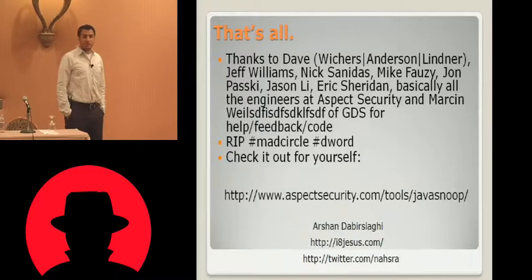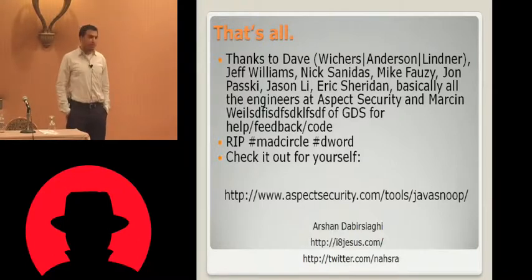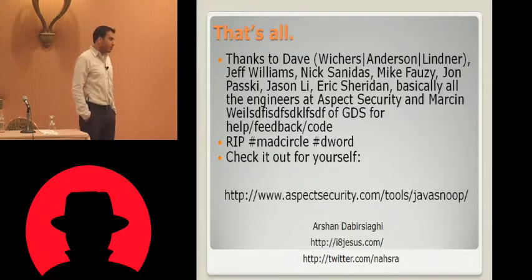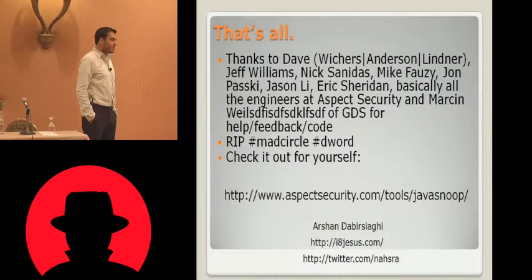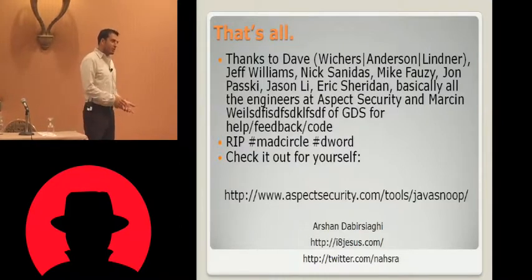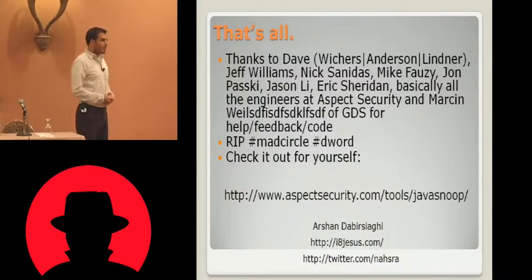I have terrible news. Java Snoop totally won't help you with understanding obfuscated code. Because you're looking through the methods and they're like named A, B, C, D, E, F, G. And the classes are all named something similar. So the obfuscation makes the code unreadable. Java Snoop can't help you read it any more clearly than that. There are de-obfuscators out there.